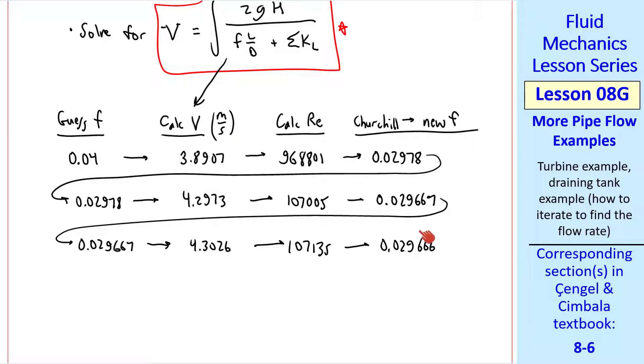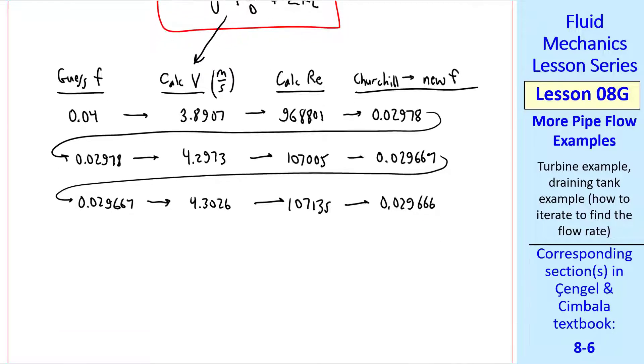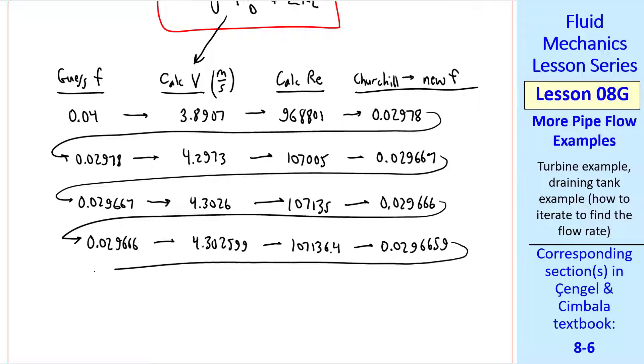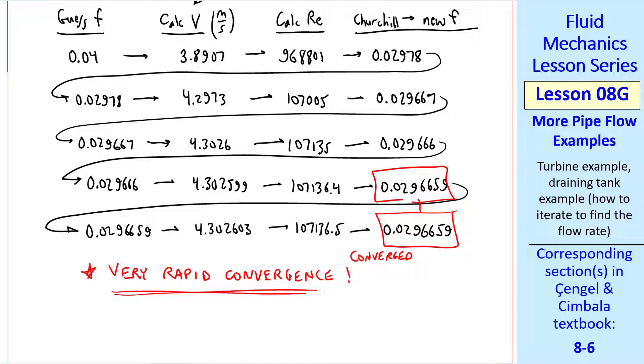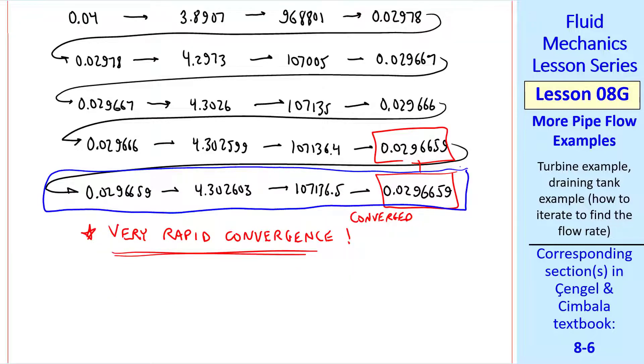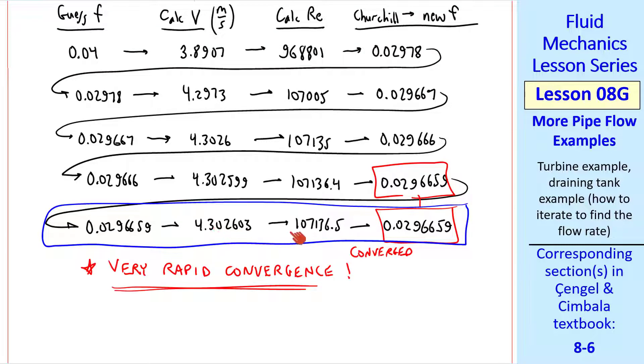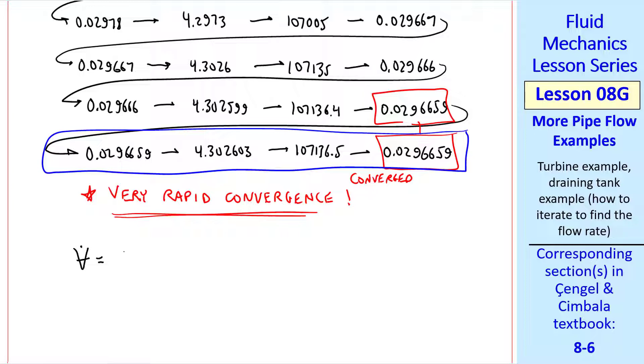We're already good to more than four digits. We could stop there, since we're not more accurate than that anyway, but I'll keep going where I'm adding more digits, and even to six digits, we have converged. As you can see, this technique yields very rapid convergence. This last row is our final results for f, v, Reynolds number, and the converged f again.